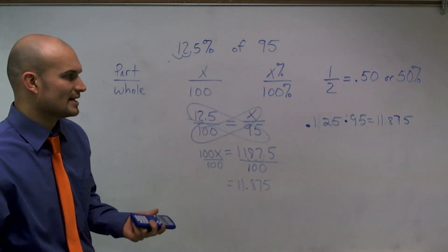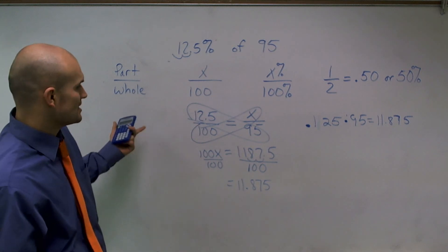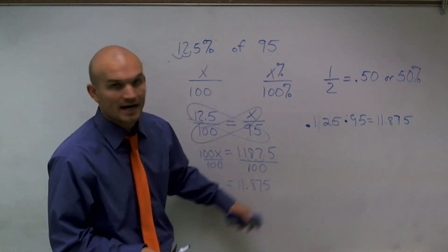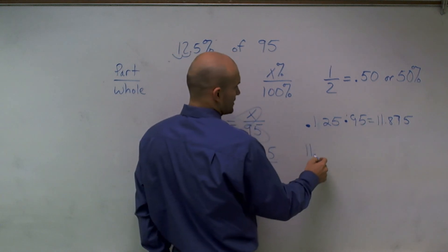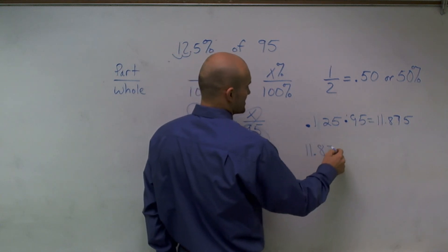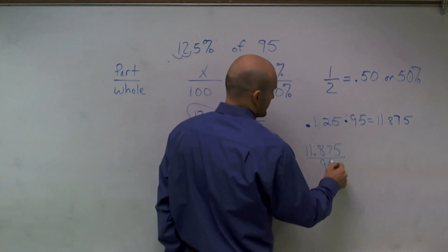And what we can look at, that is going to be the total. Now, if I take this answer, just to check my work again, if I say 11.875 divided by 95, right, my part out of my whole.